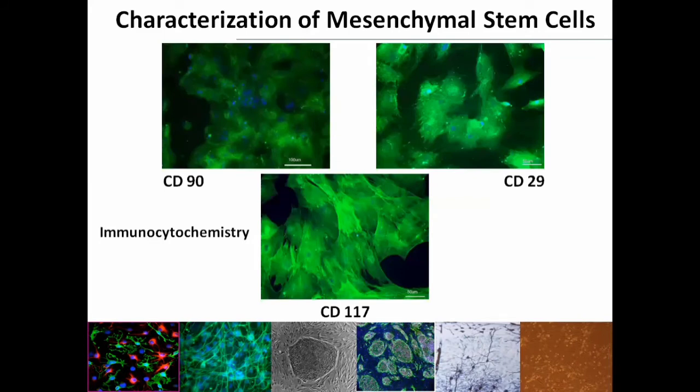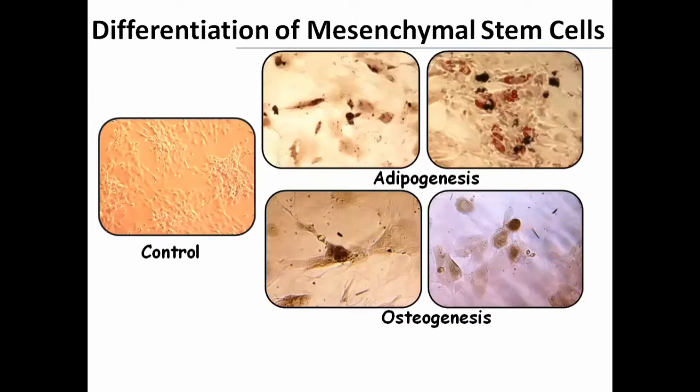After successful isolation and propagation of mesenchymal stem cells, characterization of MSCs was done using MSC-specific markers including CD90, CD29, and CD117 (c-KIT), and we obtained positive expression of these MSC-specific markers. The next step was to check adipogenesis and osteogenesis in MSCs. MSCs in adipogenic medium showed intracellular lipid droplets, while in osteogenic medium MSCs showed calcium deposits.